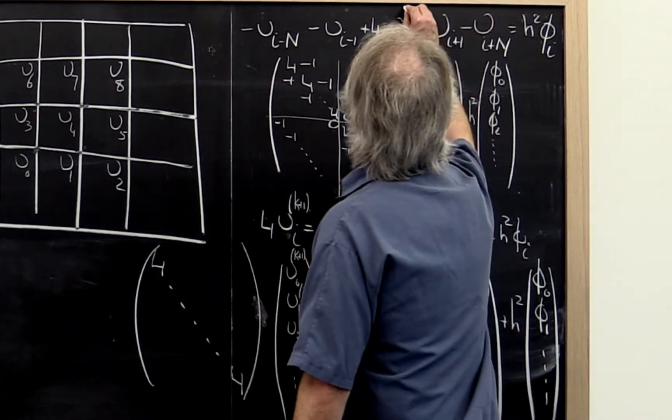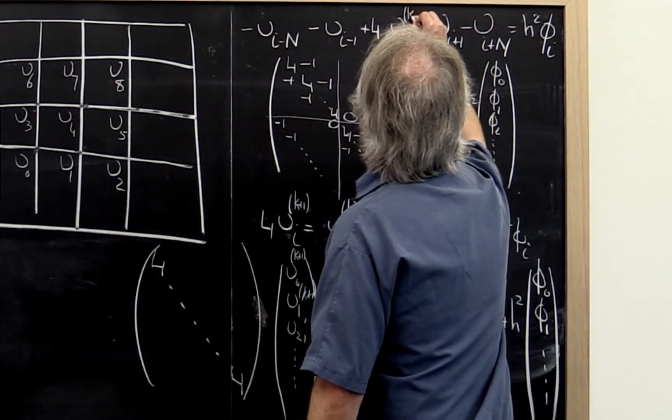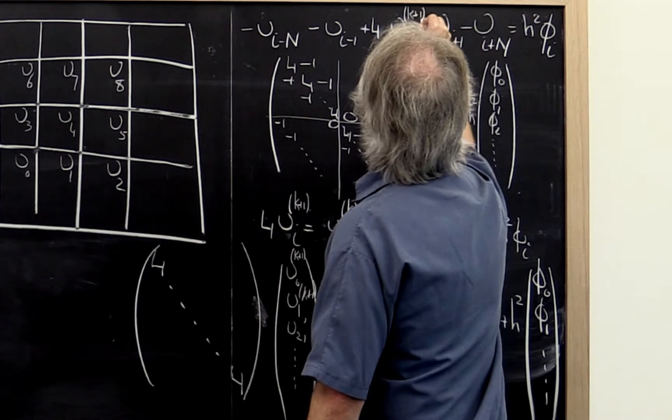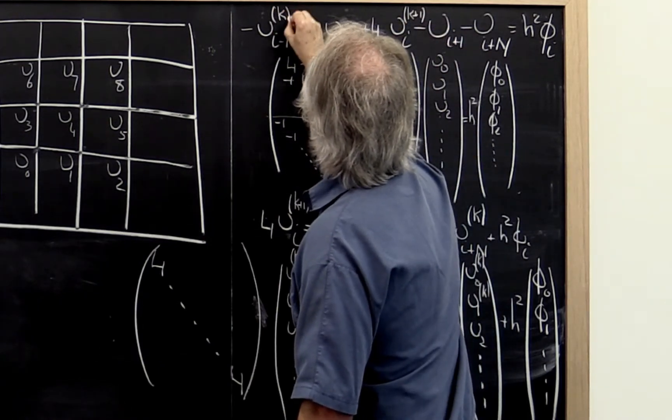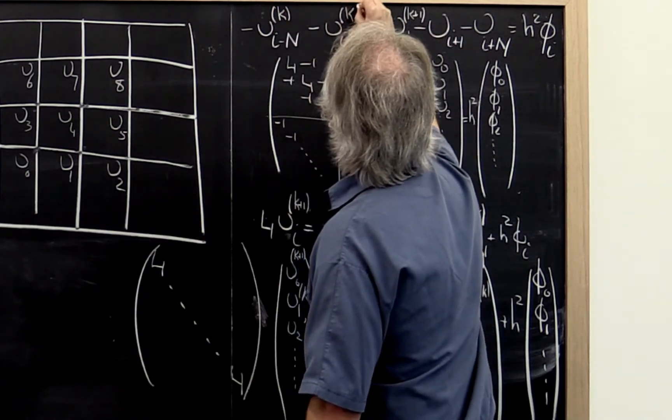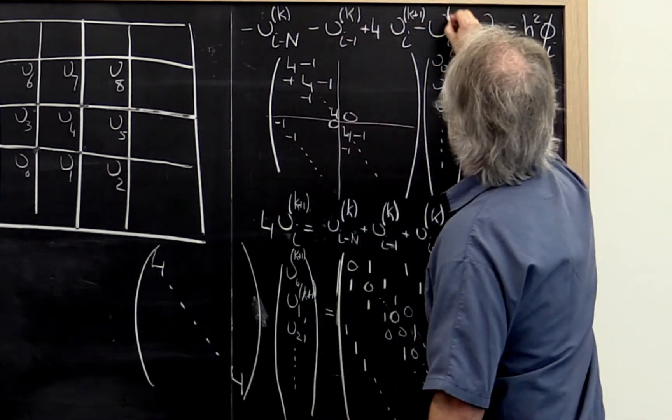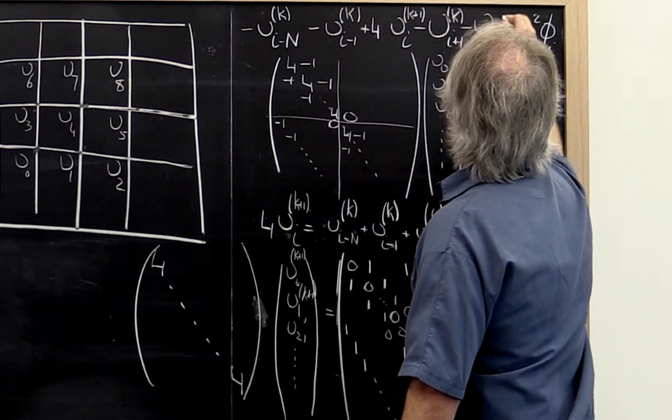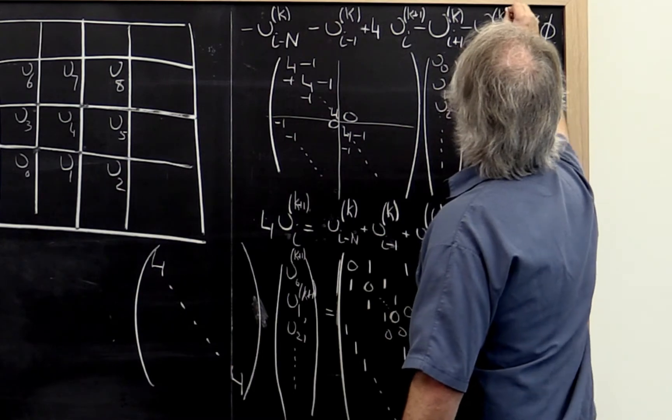So here we say this is the k plus first iteration value and all of these are the values at the current iteration or of the previous values, k, however you want to look at it.